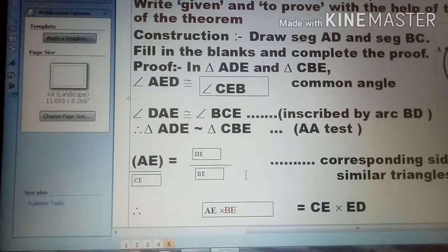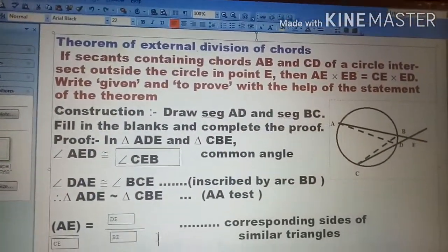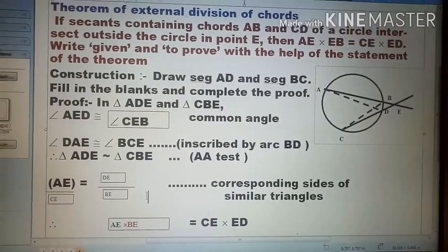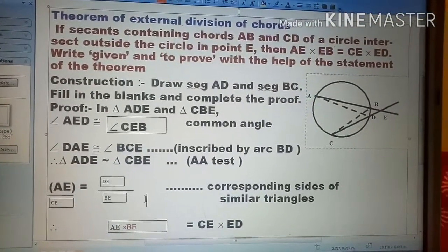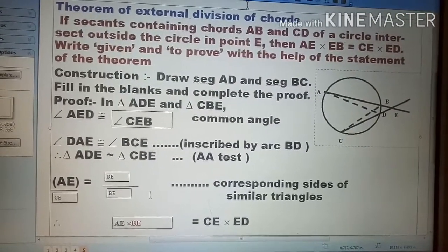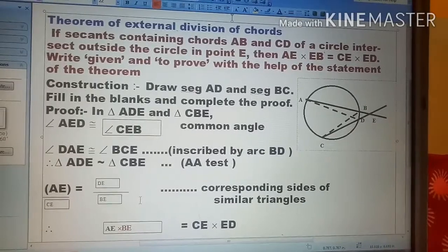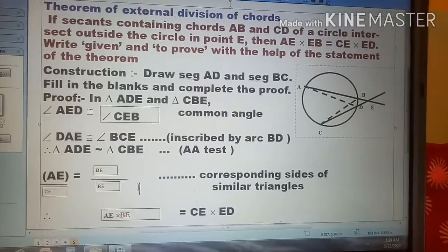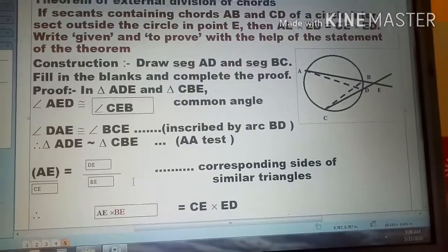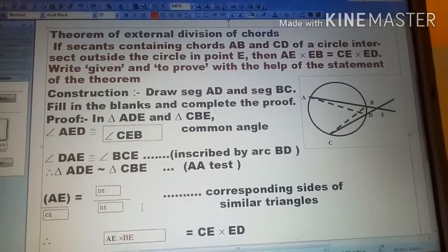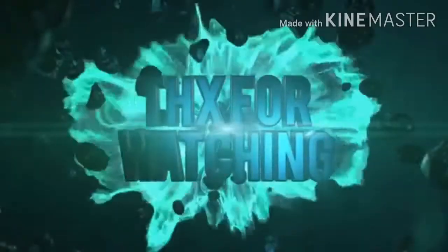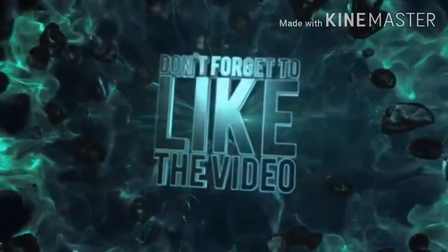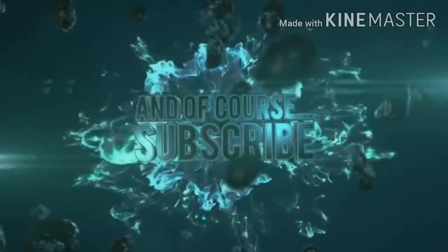Which we have learned, the theorem of external division of chords. So if you want to take its screenshot you can take. And this is what we have explained. When the chords are in any way intersecting, then the exterior and interior segments are equal. So like this it is complete. And shall we stop here? To be continued.